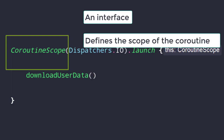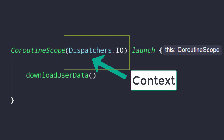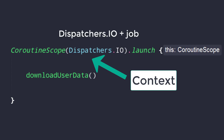In Kotlin coroutines, we have another scope interface called GlobalScope, which is used to launch top-level coroutines operating on the whole application lifetime. In Android development, we very rarely use GlobalScope. Both of these scopes also act as a reference to the coroutines context. We can include the name of a job instance plus a dispatcher as the context for the scope. The plus operator can be used to merge multiple coroutines contexts.